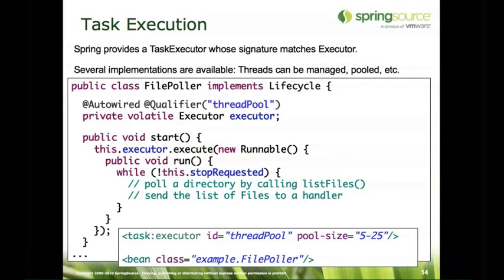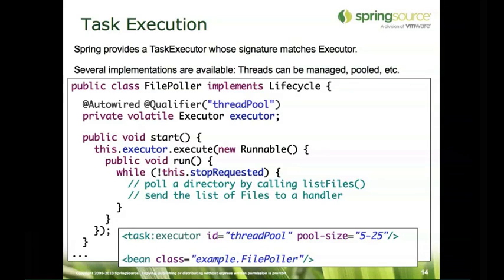Spring's task executor abstraction provides implementations based on plain Java 5 concurrent features like basic thread pools, but also has an implementation that delegates to a CommonJ WorkManager. So when running in that type of environment, threads can be managed by the application server. The executor is injected and configured with the Spring 3 task namespace, which lets you set pool size, queue capacity, rejection policy, and other thread pool properties. The execute method invokes the task asynchronously — this is needed in the start method because the while-loop polling the file system must run in the background; otherwise it would block application startup.